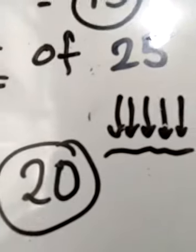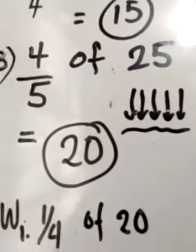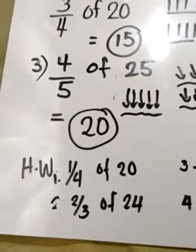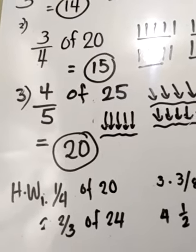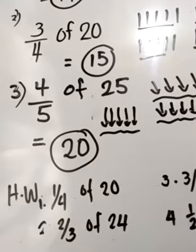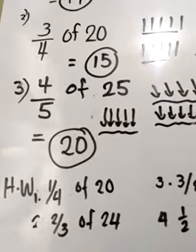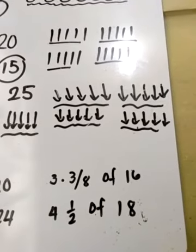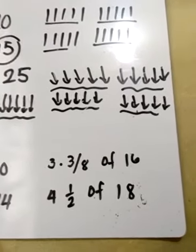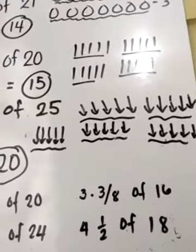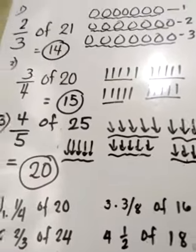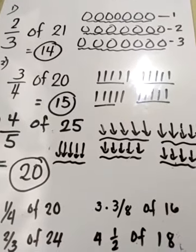Ganun lang ang gagawin natin to make it okay to understand well the process. You have your assignment I have given you. Your homework: 1, one-fourth of 20; 2, two-thirds of 24; 3, three-eighths of 16; and the last one, one-half of 18. Thank you for listening and you can do your work now.